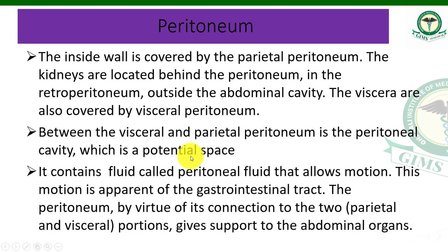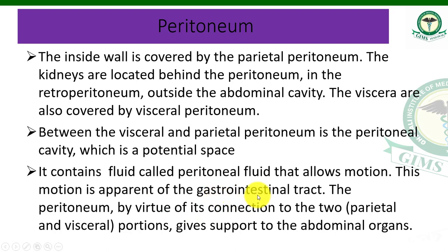Between these two lines there is a cavity — this is called a potential space, the peritoneal cavity. The peritoneal cavity basically contains peritoneal fluid, which allows motion. This fluid allows the motion of the gastrointestinal tract — all the GIT tract has pressure on it — and this motion is possible because of this fluid.